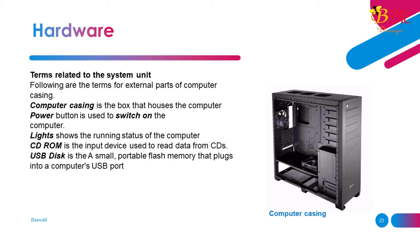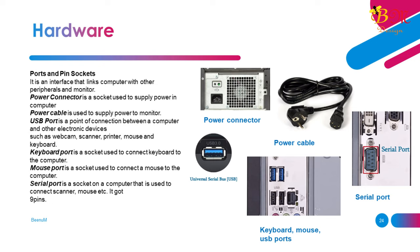Terms related to the system unit — external parts of computer casing: Computer casing is the box that houses the computer. The power button is used to switch on the computer. Lights show the running status of the computer. CD-ROM is the input device used to read data from CDs. A USB disk is a small, portable flash memory that plugs into a computer's USB port. Ports and pin sockets provide an interface that links the computer with other peripherals and monitor. The power connector is a socket used to supply power in the computer. The power cable is used to supply power to the monitor. USB port is a point of connection between a computer and other electronic devices such as webcam, scanner, printer, mouse, and keyboard.